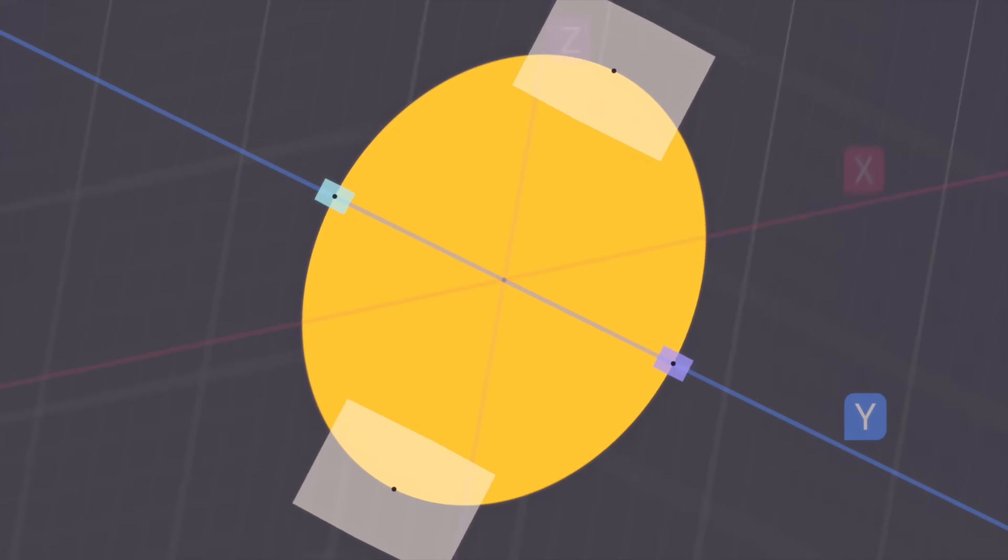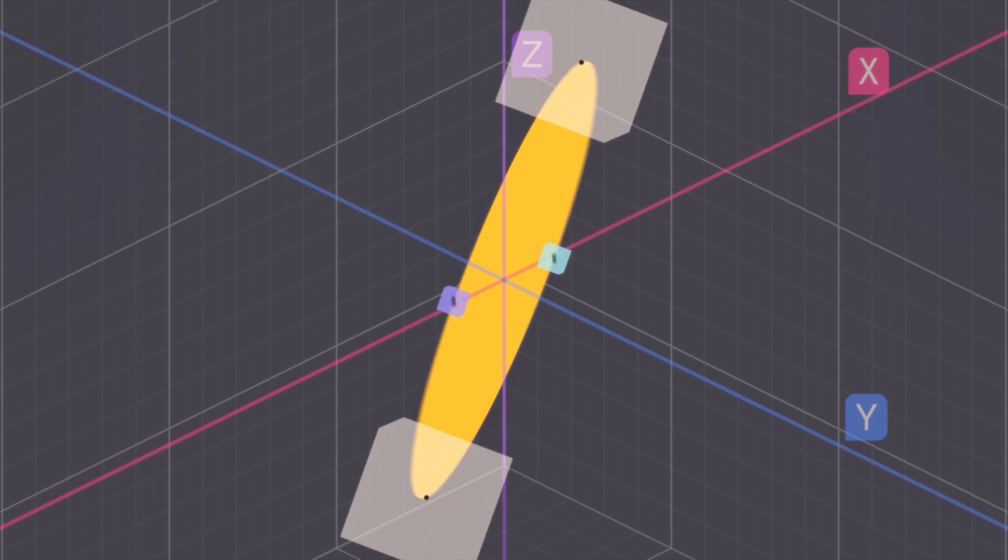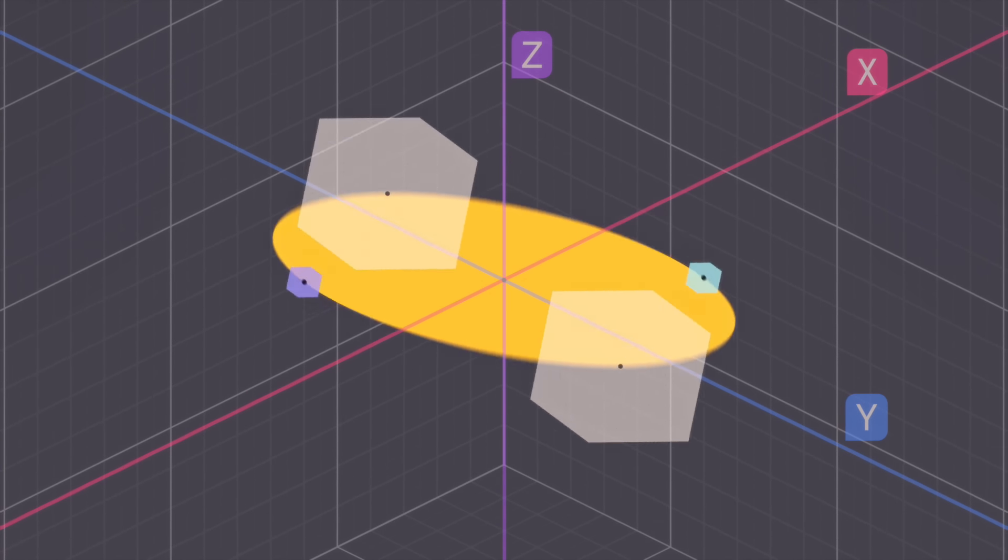And there you have it, an intuitive explanation for the intermediate axis theorem. Or tennis racket theorem, or Janabekov effect, or whatever you want to call it.